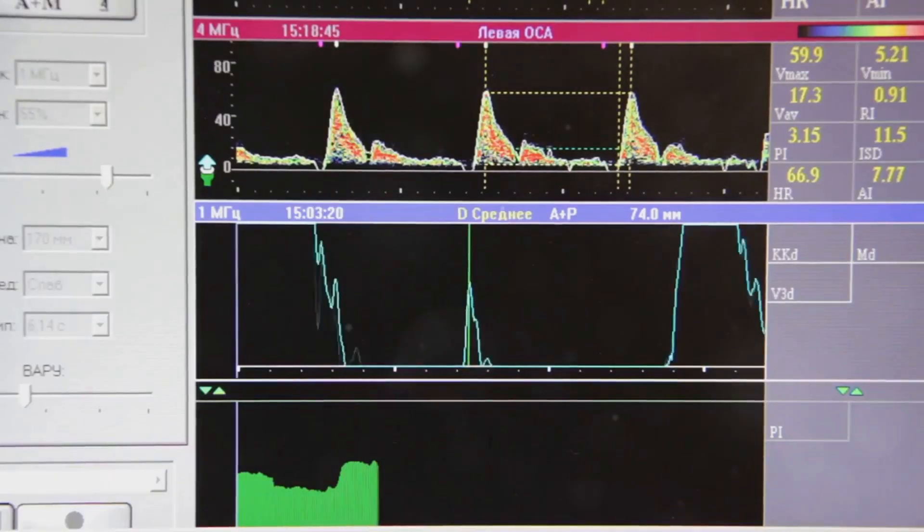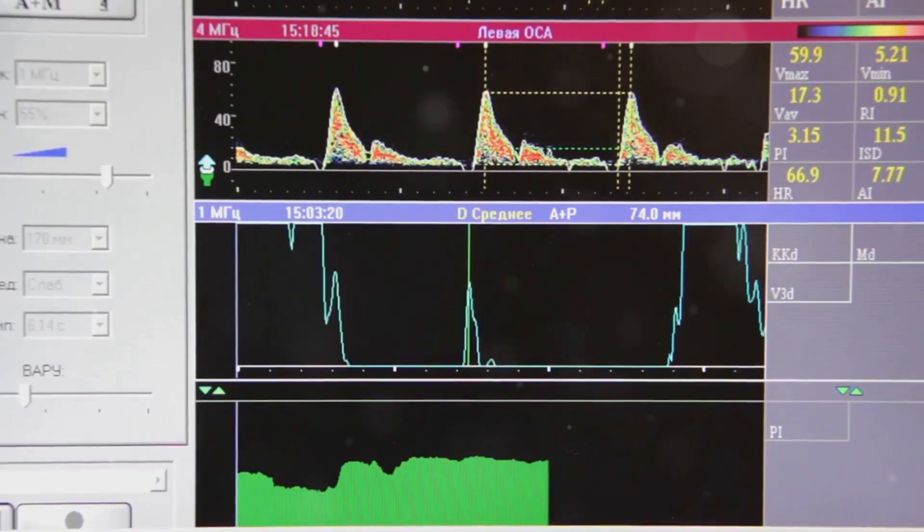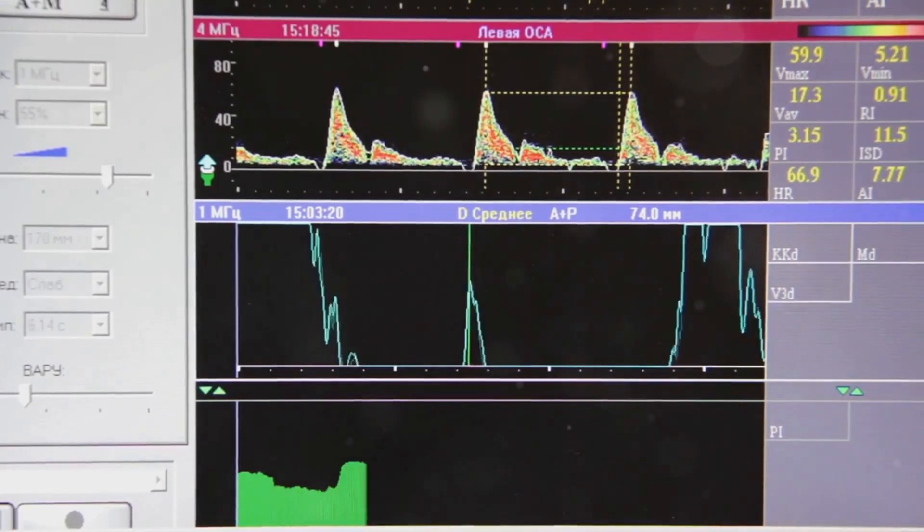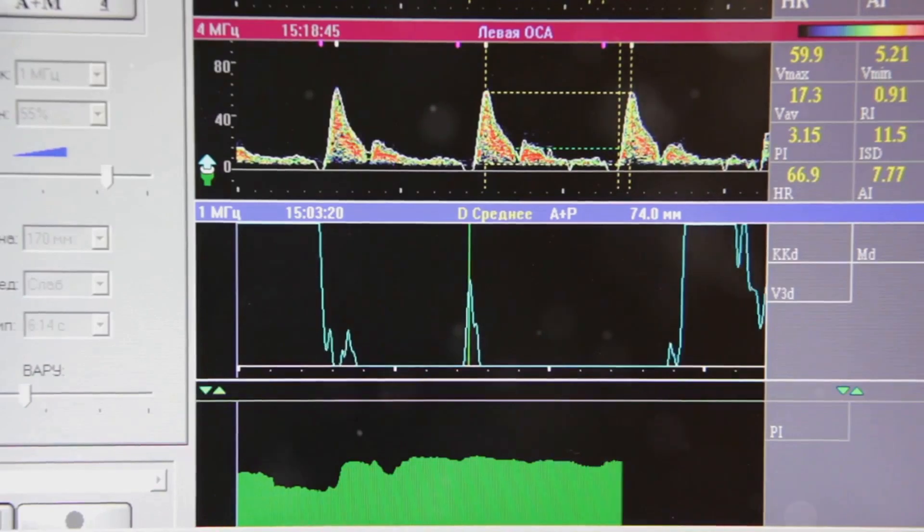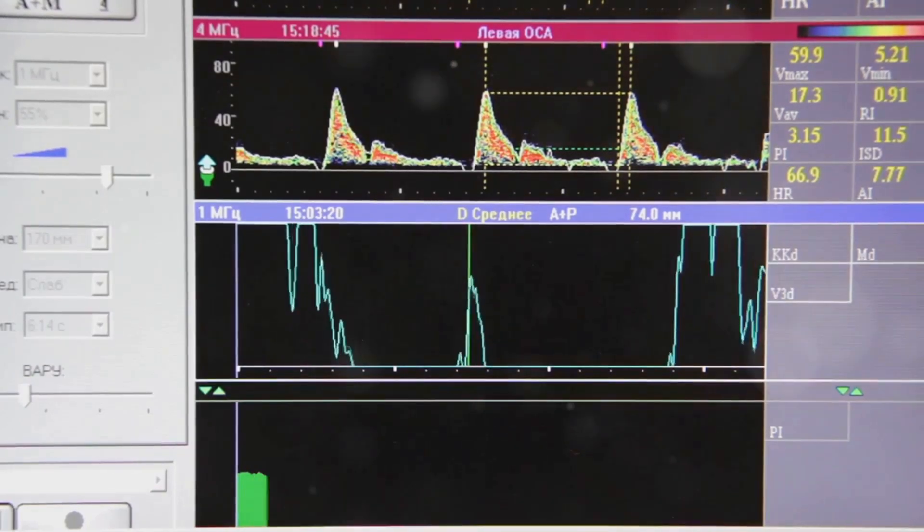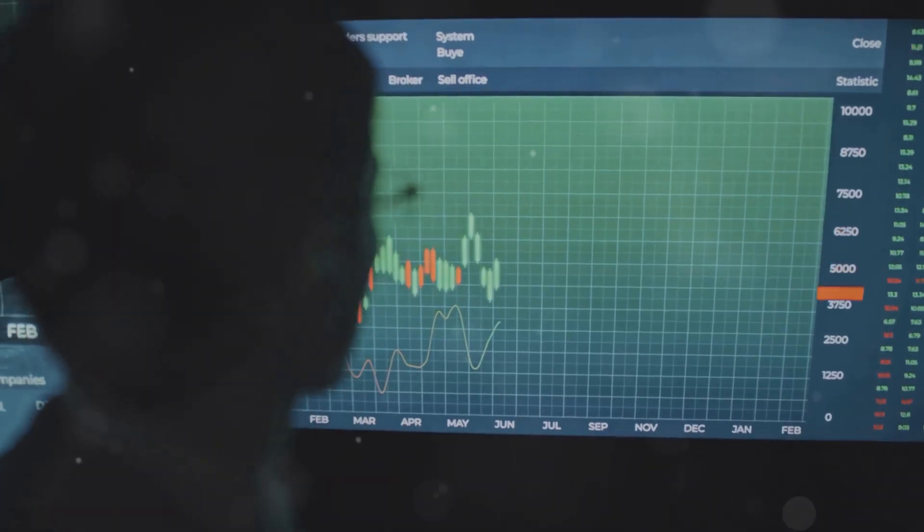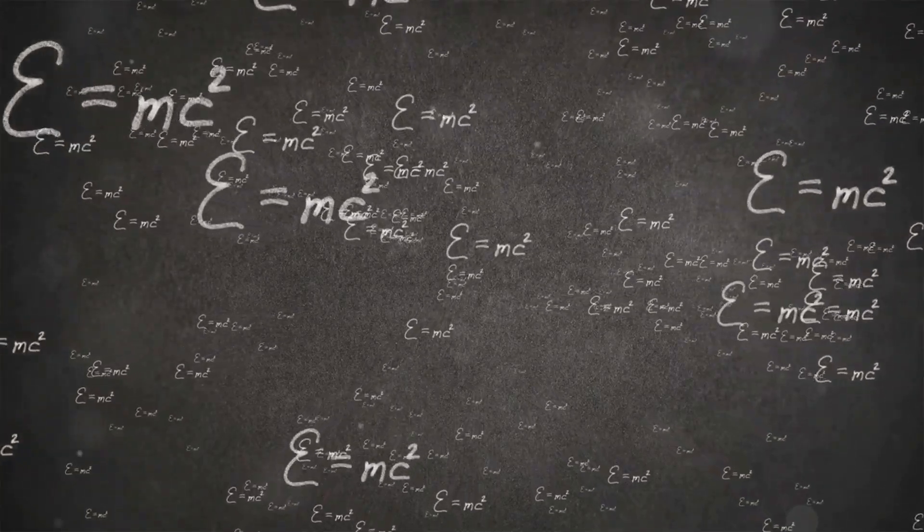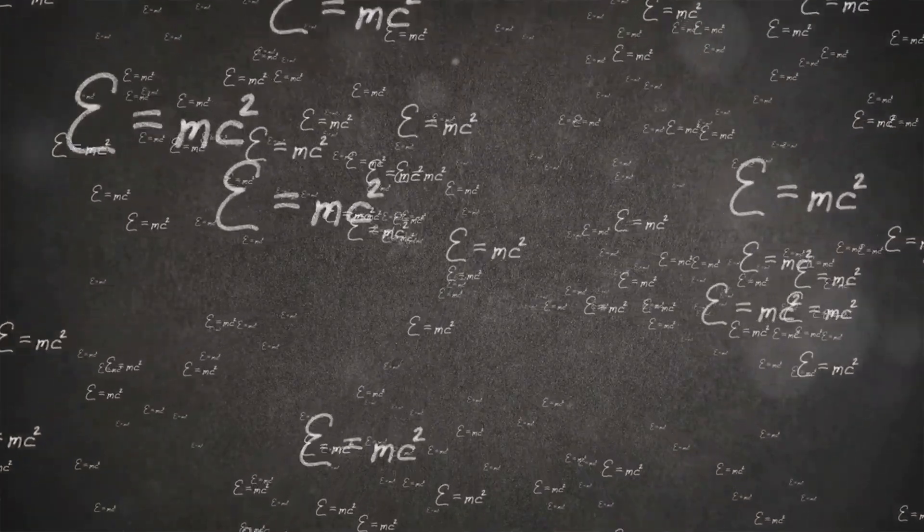The WOW signal, as it came to be known, had all the hallmarks of an artificial signal. It was strong, narrowband, and came from a specific point in the sky. The name WOW came from the excited notation made by astronomer Jerry Amen when he first saw the data. To this day, no one has been able to explain the WOW signal definitively.